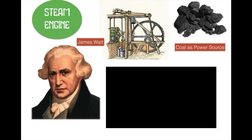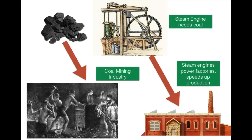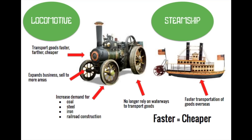James Watt spent about ten years improving the steam engine, which had already been developed, making it more efficient. The steam engine becomes the main power source of the Industrial Revolution, and to power it we need coal — creating an entirely new coal mining industry. As more factories are built, more steam engines are needed, and demand for coal keeps increasing. Coal mining becomes one of the most dangerous jobs available, requiring large numbers of workers.